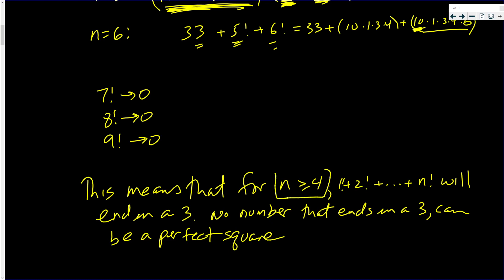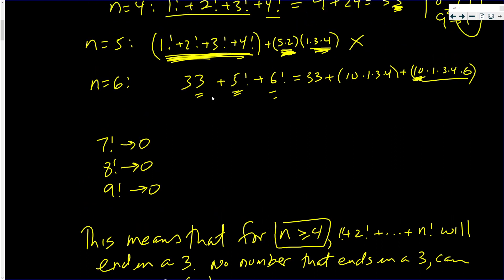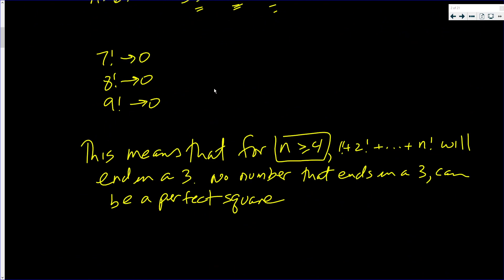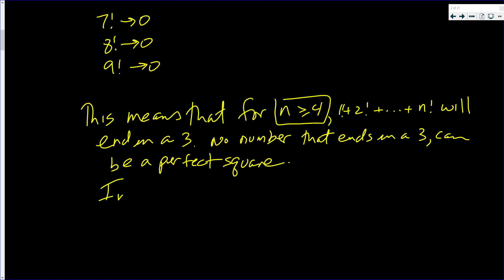So let's see, this was for n four or bigger. That is why I checked one, two, and three. And only one and three worked. Only when n is one and n is three worked. Two did not work. In conclusion, only when n equals one or n equals three will one factorial plus two factorial up to n factorial be a perfect square.